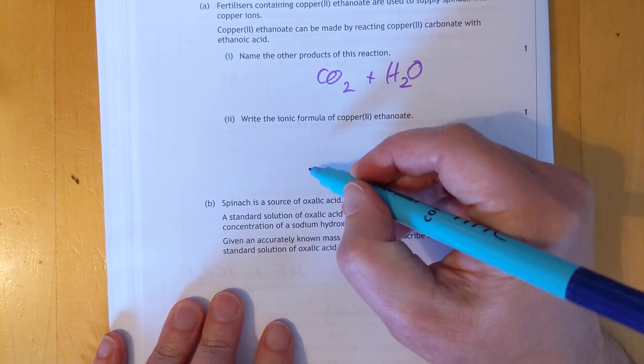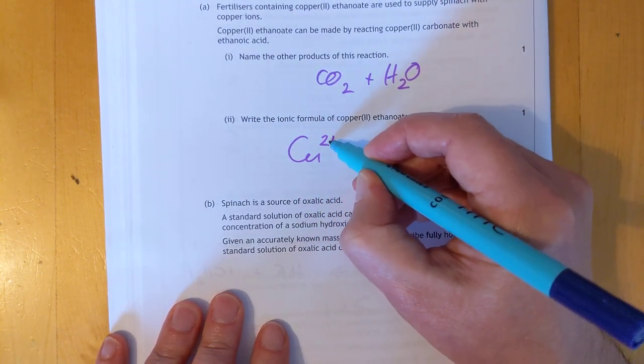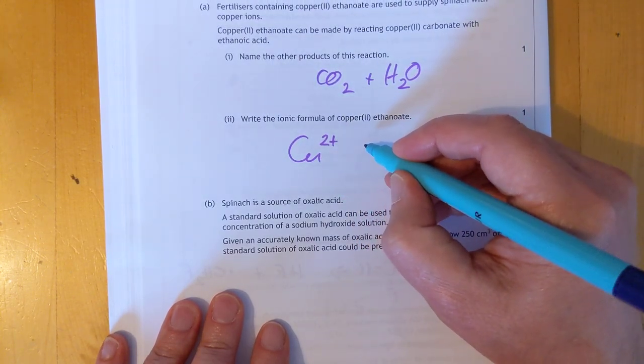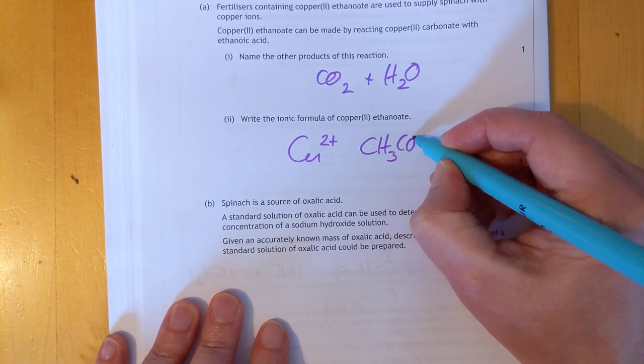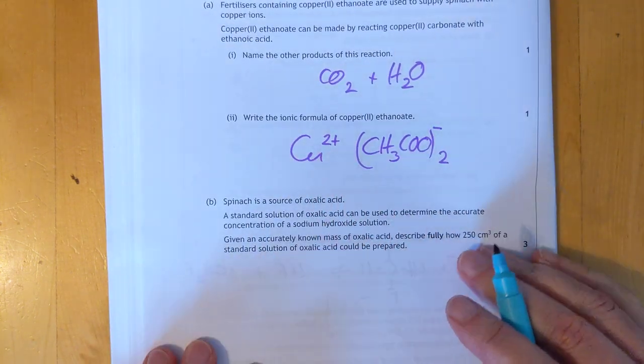Ionic formula. Oh, come on guys. Why? Nobody in chemistry cares about ionic formula. But if you're interested, what you're supposed to do is put the charges next to the ions. And ethanoate ion CH3COO minus. That's a charge of 1 minus and there will be two of them to balance up the 2 plus.